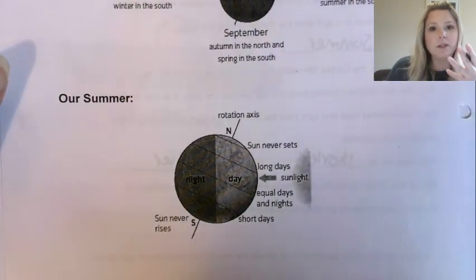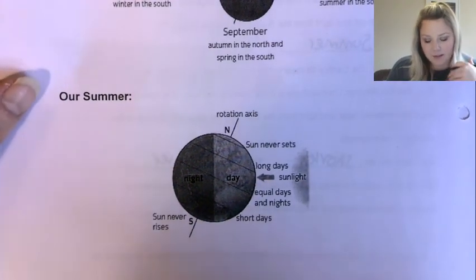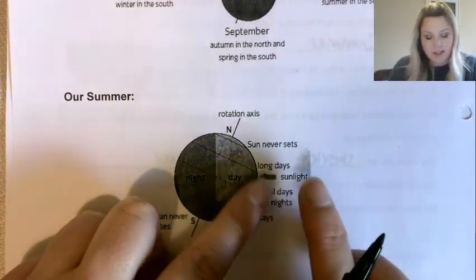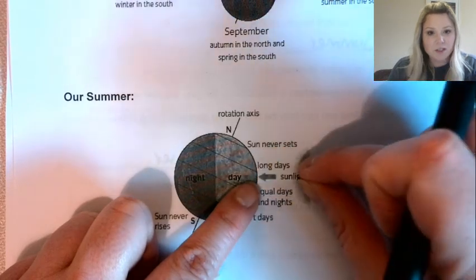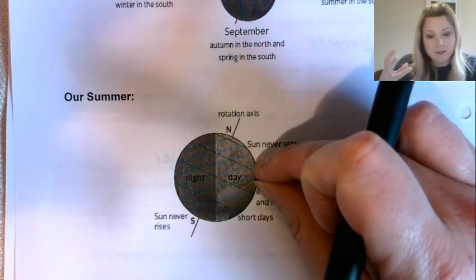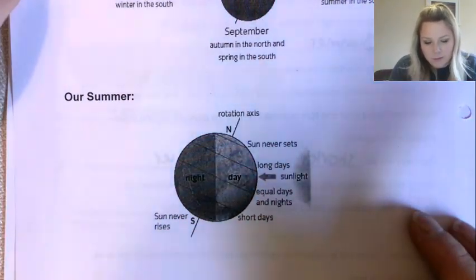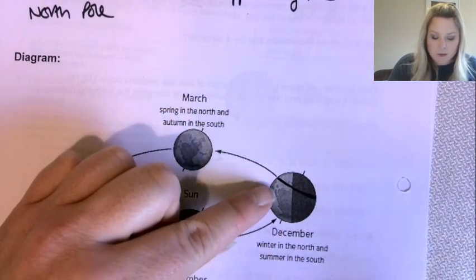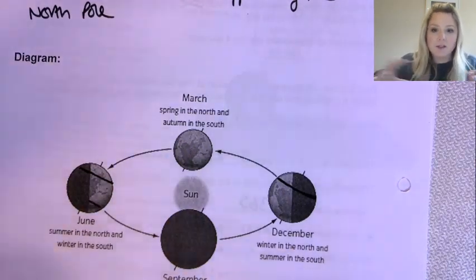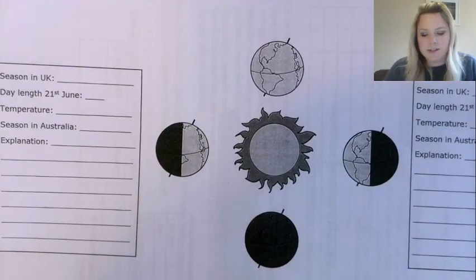One other thing I want to point out: the sun is really high in the sky in summer and low in the sky in winter, and that's all because of the tilt as well. Whenever we're tilted towards the sun, the sun appears really high and the sunlight lands on us in a really concentrated ray — that's why it's warmer. Whereas when we're tilted away, the sunlight lands on a bigger area and spreads out, which is why the sun is weaker for us in winter.